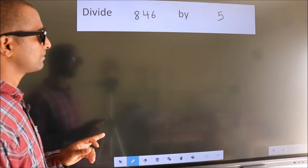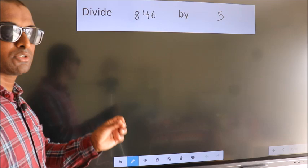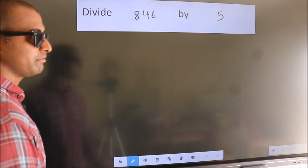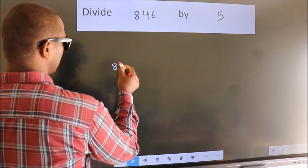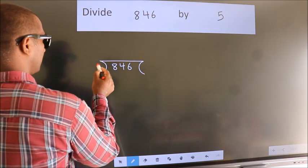Divide 846 by 5. To do this division, we should frame it in this way: 846 here, 5 here.